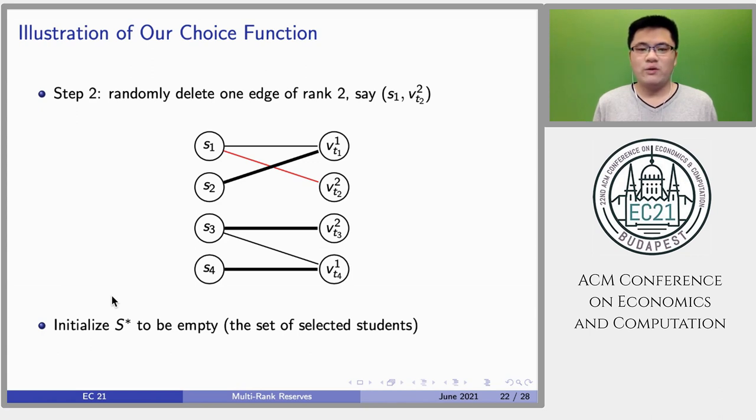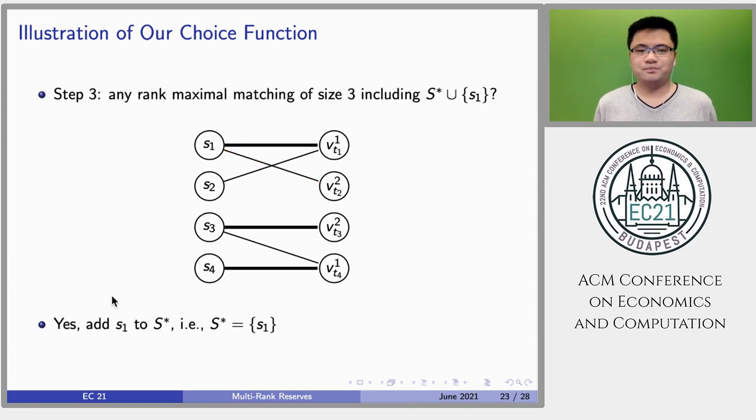For now, we do not make decisions on which students are selected. Let S* denote the set of selected students and initialize it to be empty. We start with student S1, who has the highest school priority, and check whether there exists a rank-maximal matching of size 3 that contains S1 and S*. We can find such a rank-maximal matching as shown in the figure, then we add S1 to S* and move on to student S2.